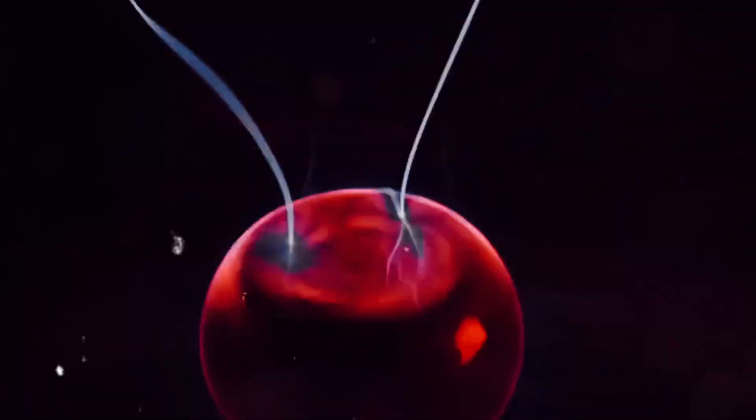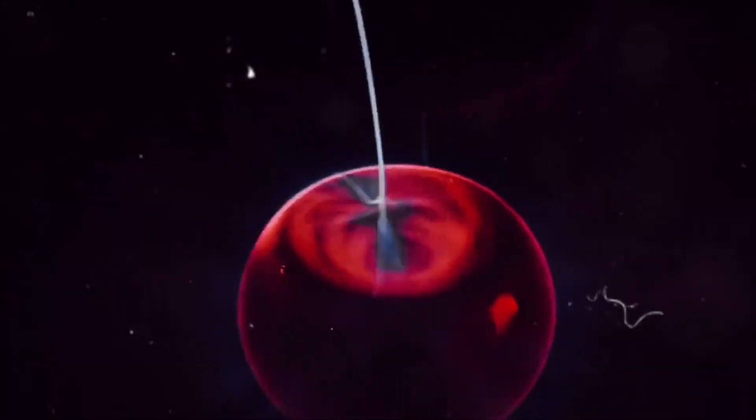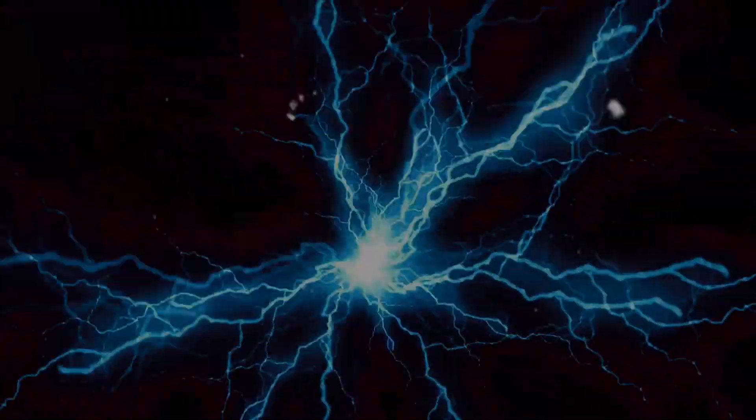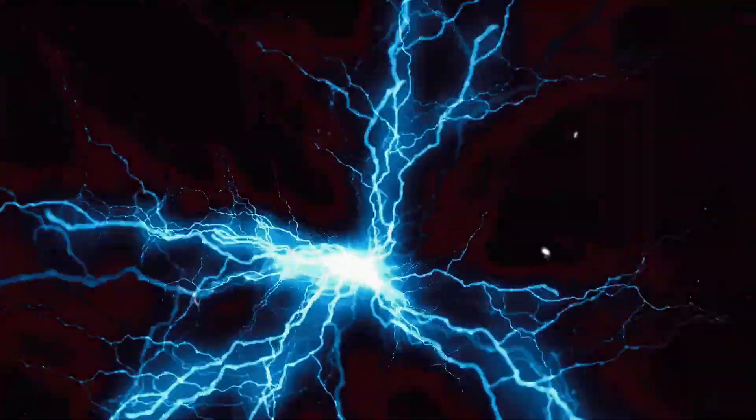So the next time you sit down at a table, remember, you're not really sitting on it, you're hovering above it, separated by a microscopic gap of repelling electrons. The real question is, what happens when electrons get too close?